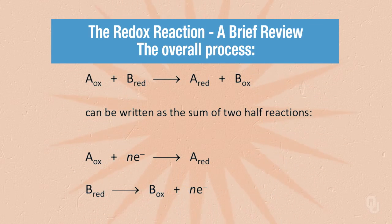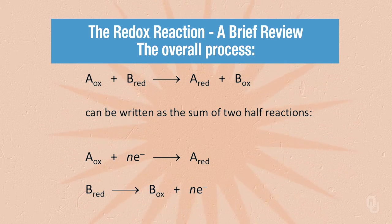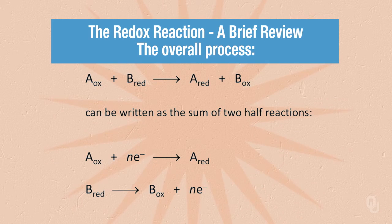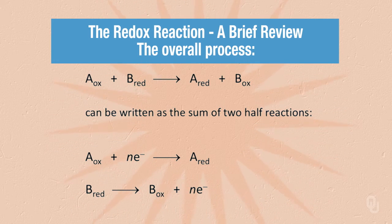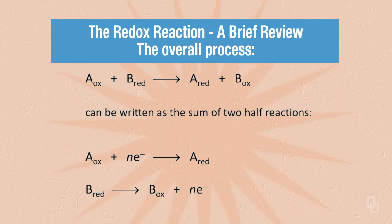Redox reactions are discussed in general chemistry, so I'll give a brief review. Looking at this diagram, we see that molecule A in an oxidized state reacts with molecule B in a reduced state, ending with A being reduced and B being oxidized. We can write this overall process as the sum of two half reactions, where A gains electrons to become reduced, and B loses electrons to become oxidized.